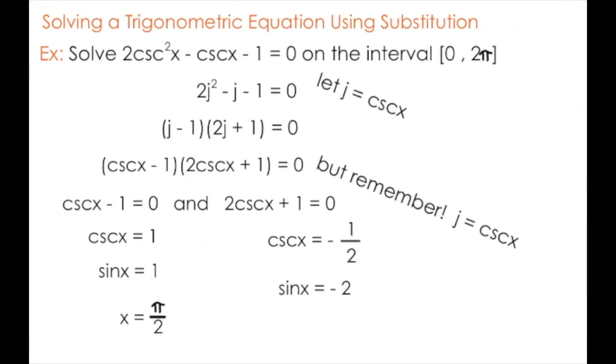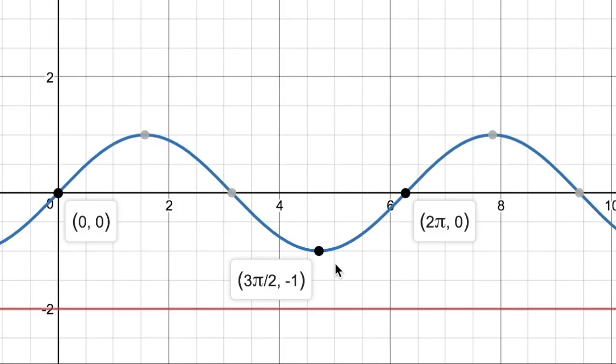Again, I can lean on my understanding of reciprocal trig identities to say that this equation is really just sine of x is equal to -2 over 1, also known as sine of x is equal to -2. Going back to my understanding of the graph of sine of x, I know that the minimum of sine of x is -1, and this function will never reach -2.